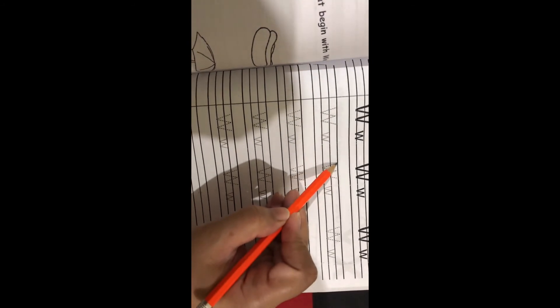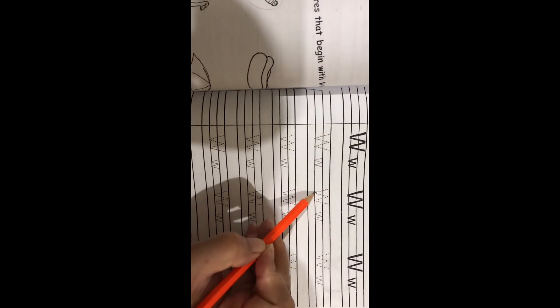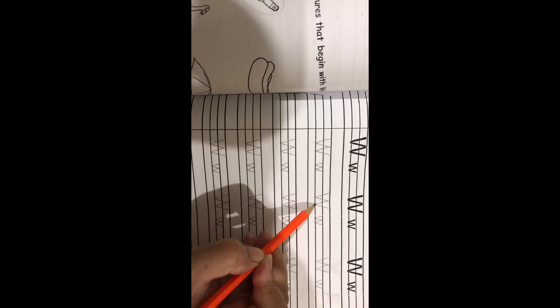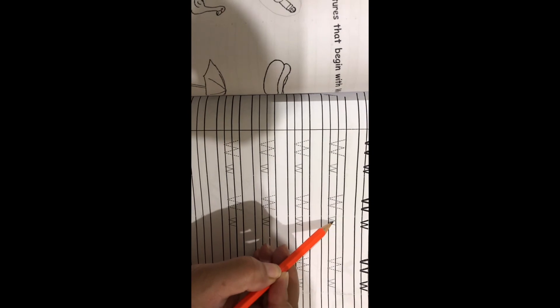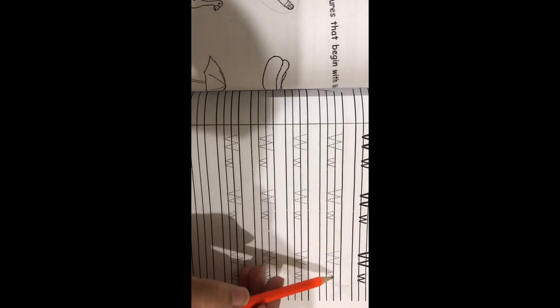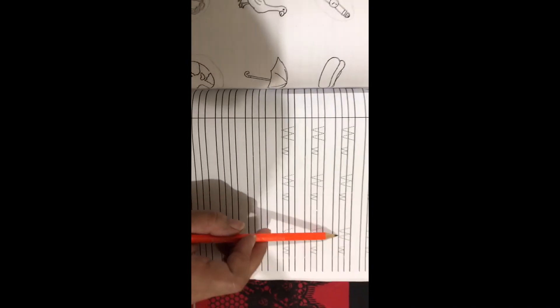The same you are going to do. Go down slant line, go up, come down, go up. Here, go down, go up, come down, go up. You are going to do all these dotted.